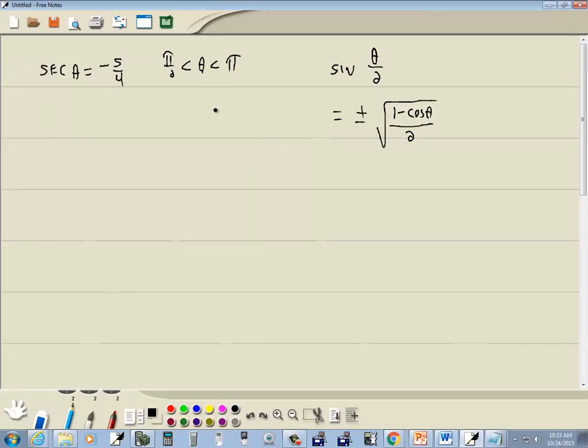They're telling us theta falls between pi over 2 and pi which is this quadrant, so this is where theta falls.